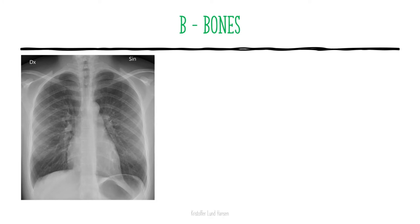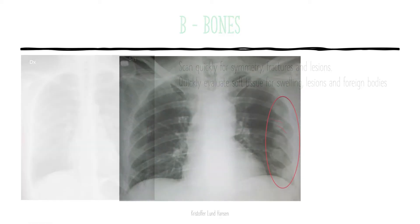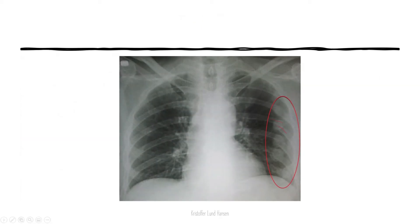Then we assess B for bones. This is a step that should be quickly looked over unless you have a clinical suspicion of a fracture. You scan quickly for symmetry, fractures and lesions, and quickly evaluate the soft tissues on the side for any swelling, lesions and foreign bodies. In this picture, you can clearly see fractures of many of the ribs — the ribs are displaced and you can see they have already started to form the callus.